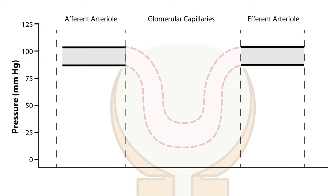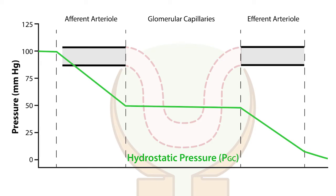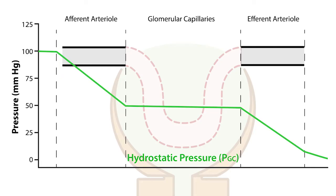Increases in afferent arterial resistance lead to decreases in glomerular capillary hydrostatic pressure. Let's use this animation to show what happens to glomerular capillary hydrostatic pressure, which is represented by the green line, as afferent arterial resistance increases, which is represented by the narrowing of the afferent arterial.